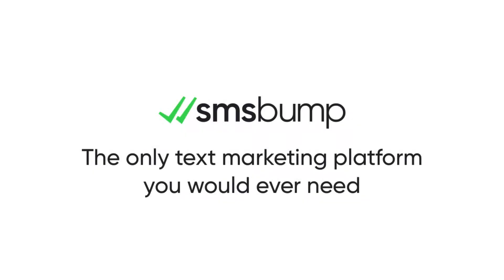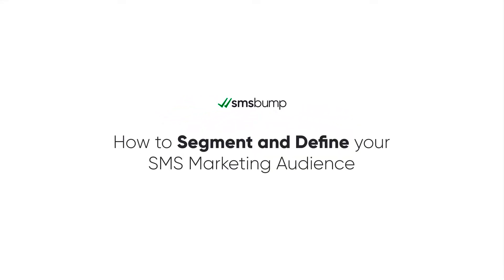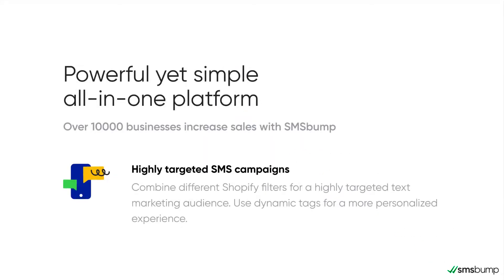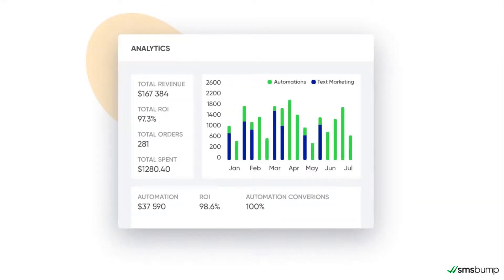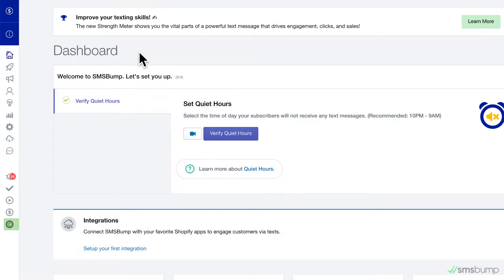Hey and welcome to the newest SMS Bump video. Today we're talking about contact lists and customer segments — more specifically how to create new subscriber lists and how to segment your customers based on their activity and personal data in your Shopify store. The main difference between lists and segments is that contact lists are static while segments update dynamically as your SMS subscribers perform different store actions.